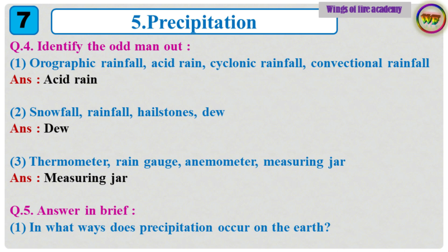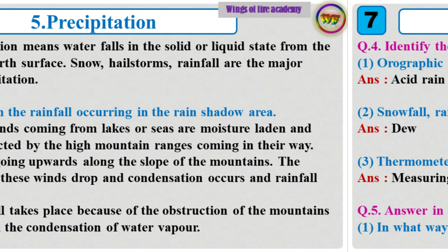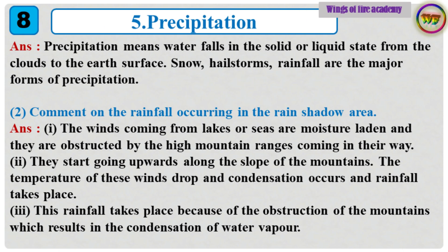Question 5: Answer in brief. 1. In what ways does precipitation occur on the earth? Answer: Precipitation means water falls in the solid or liquid state from the clouds to the earth's surface. Snow, hailstorms, and rainfall are the major forms of precipitation.